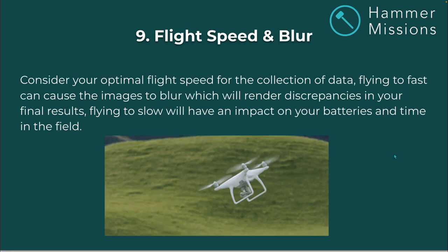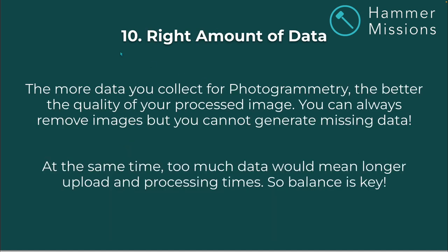Flight speed and blur: consider your optimal flight speed. Flying too fast can cause images to blur, rendering discrepancies in your final results; flying too slow will impact your batteries and time in the field — find a balance between the two. Right amount of data: the more data you collect, the better the quality of your processed image. You can always remove images, but you can't generate missing data. However, too much data means longer upload and processing times, so balance is the key.